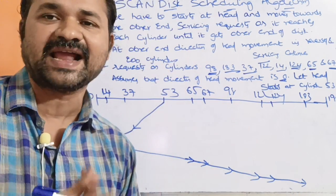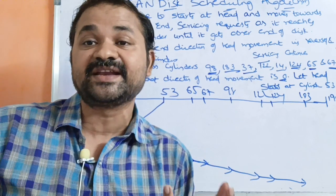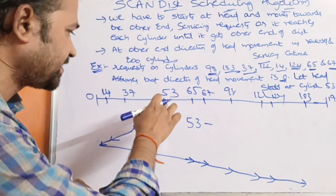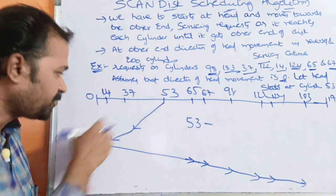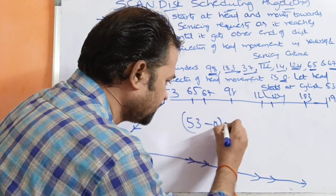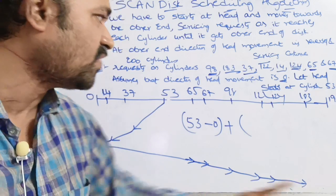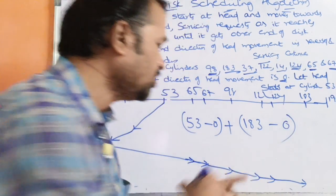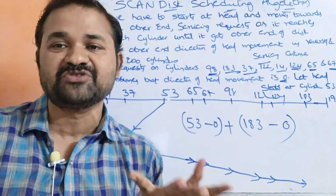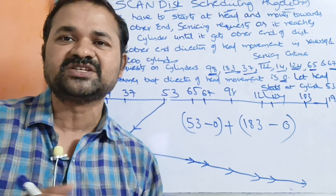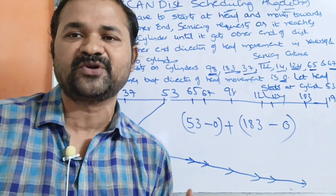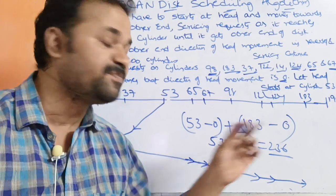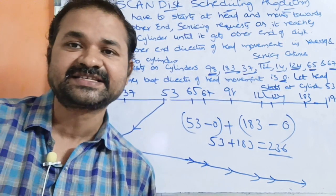Now let us calculate the total head movements. Starting from 53 and moving to 0: that is 53 - 0 = 53 movements. Then reversing from 0 to 183: that is 183 - 0 = 183 movements. So the total head movements = 53 + 183 = 236. This is the SCAN disk scheduling algorithm.